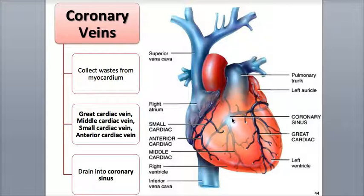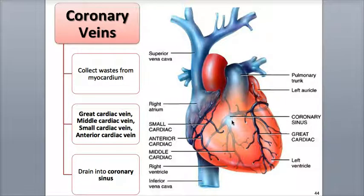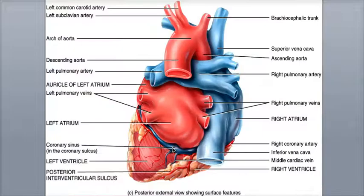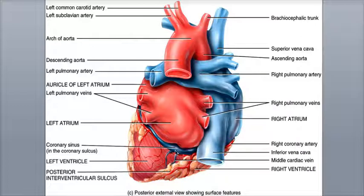This deoxygenated blood, collected by the coronary veins, makes its way to the posterior surface of the heart into the coronary sinus — a large, thin-walled vein found in the coronary sulcus. The coronary sinus can expand in diameter as it receives blood because it has no smooth muscle in its walls. After collecting blood from the coronary veins, the coronary sinus drains this blood into the right atrium. The coronary sinus is also a great landmark for the posterior surface of the heart, and its very distinct larger diameter really stands out running along the coronary sulcus. The middle cardiac vein leads into the posterior coronary sinus.